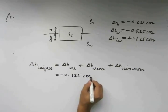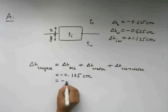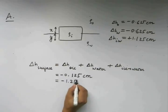we get this coming out to be 0.125 and this will be a negative sign. This is in centimeters. If we convert this into millimeters, we have minus 1.25 millimeters.